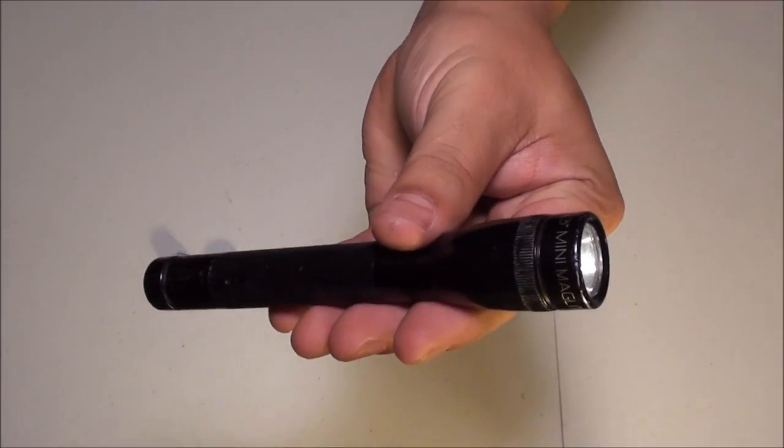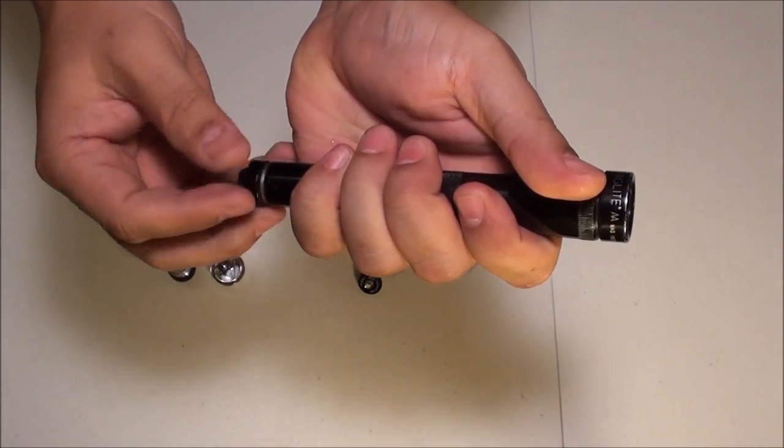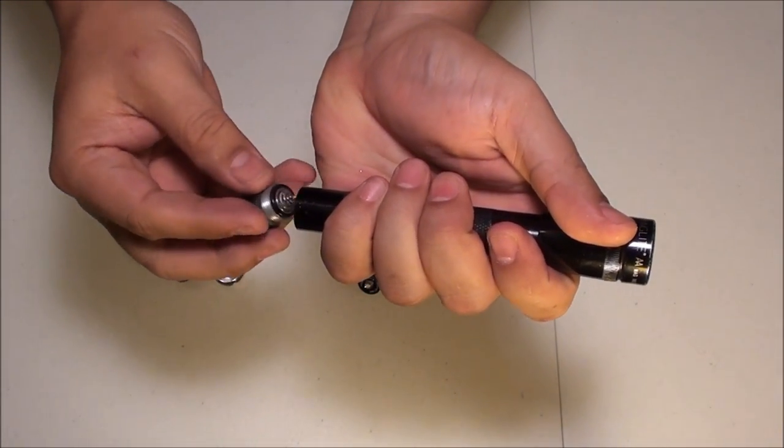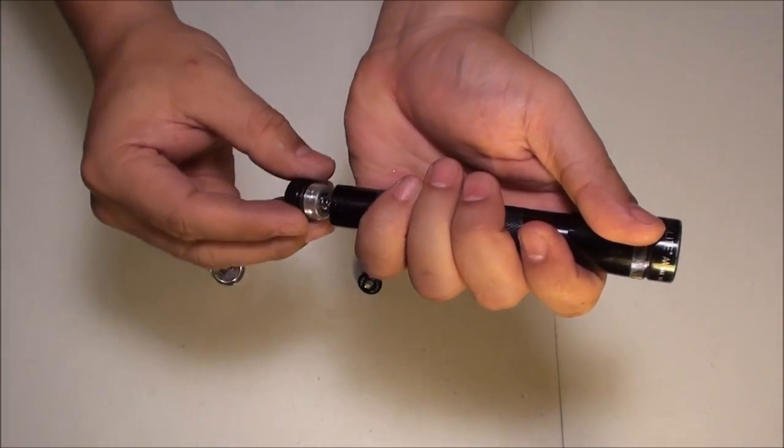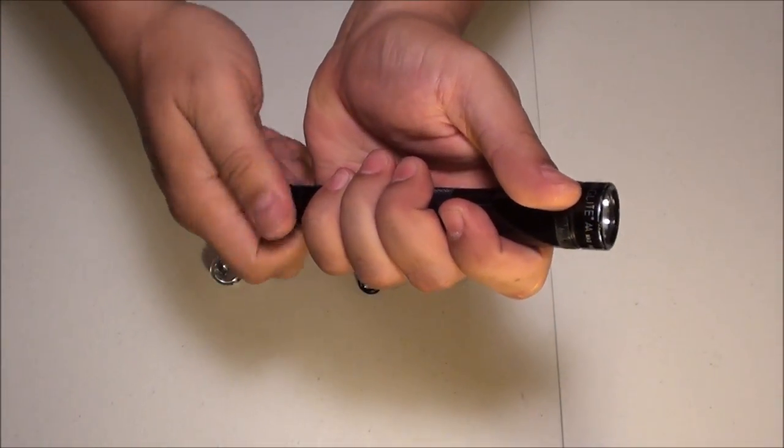All right, so let's do the conversion. Let's go ahead and take off the tail cap. Put the new button activator tail cap on, just like that.